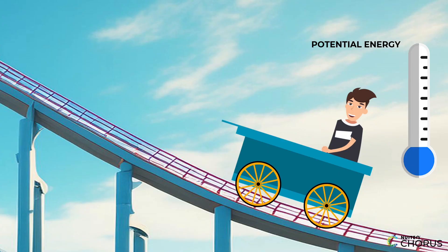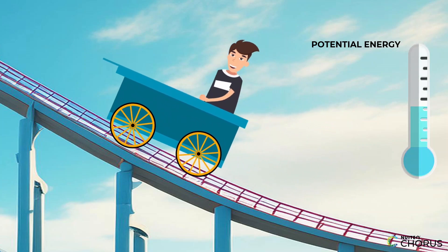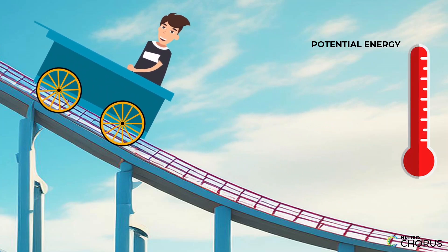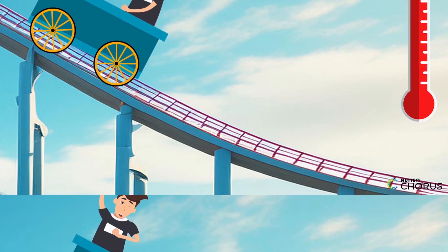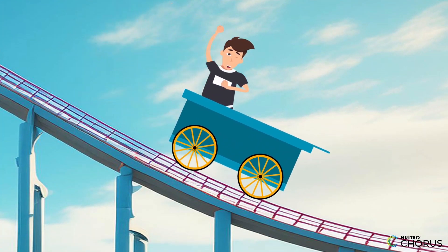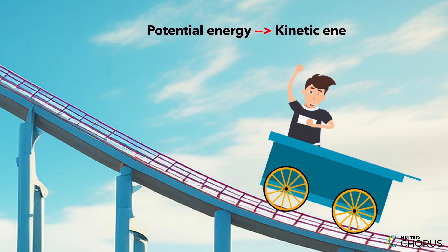You know how when you climb up to the top of a roller coaster track, you feel a little scared but also kind of excited? That's because you have potential energy stored up in your body. And when you go down that track, that potential energy turns into kinetic energy—that is, the energy of motion—and you feel that rush of excitement.